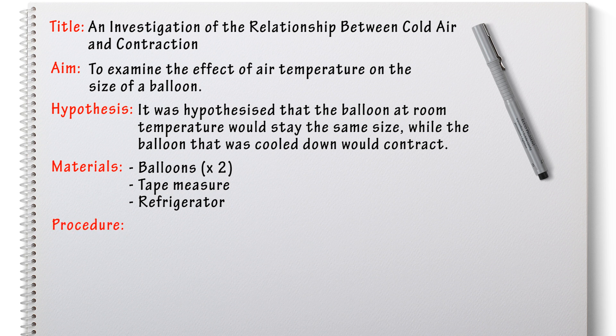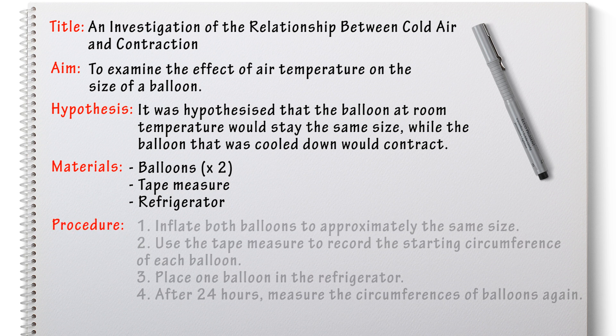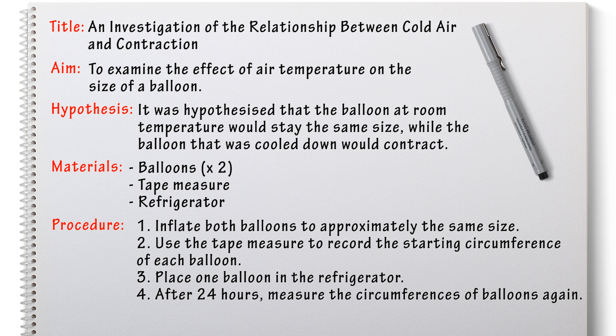In your procedure section you basically write a step-by-step recipe that uses all of the materials that you've mentioned in the materials section so that anyone can pick up your report and replicate your experiment perfectly without having seen it before. In this example we'll measure the circumferences of each of the balloons and we'll put one of them in the fridge and after 24 hours we'll take it out of the fridge, we'll measure the circumferences again and we can compare whether the one that was in the fridge has shrunk in size any more than what would normally shrink anyway.